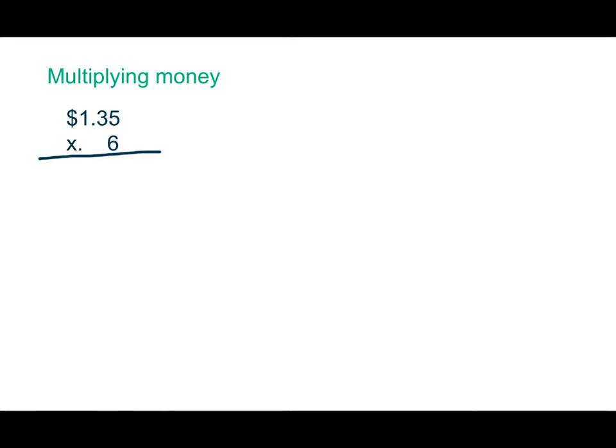And the next part of this lesson talks about multiplying money. So multiplying a money amount by a whole number. And essentially what we're doing is, so this is one dollar thirty-five cents, which is the same as a hundred thirty-five cents times six. It's the same thing. So if we did this, one hundred thirty-five times six, we would get eight hundred ten. Well, that's eight hundred ten cents, or eight dollars and ten cents.